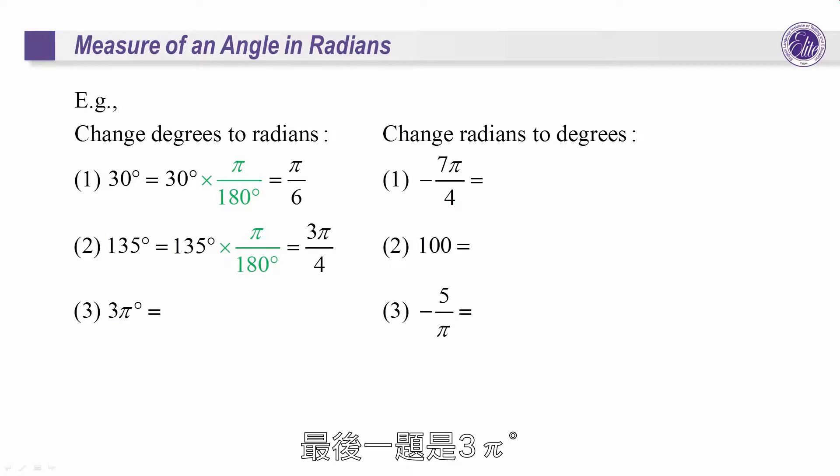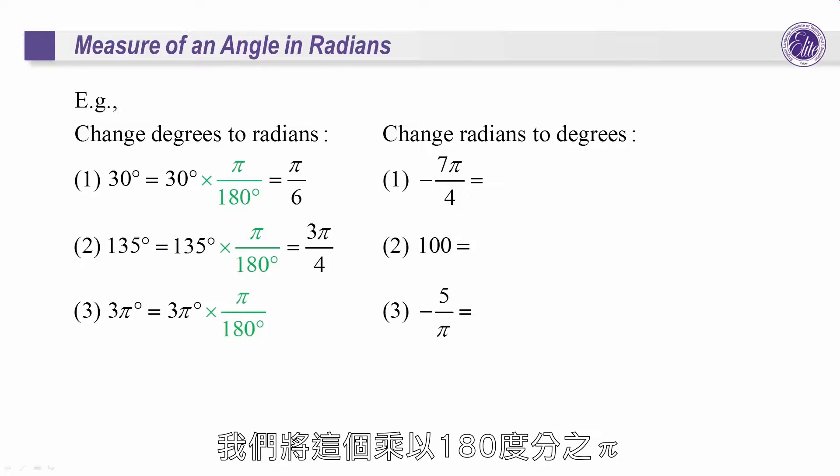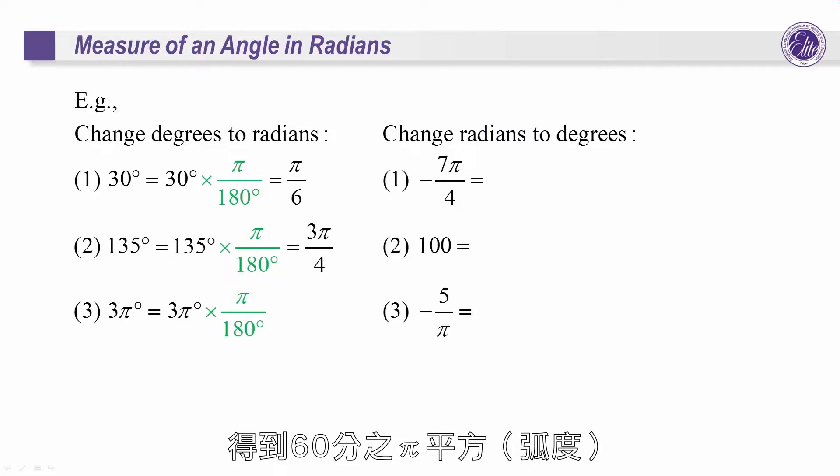The last example is 3 pi degrees. We use this and multiply it by pi over 180 degrees. This will give us pi squared over 60 in radians.